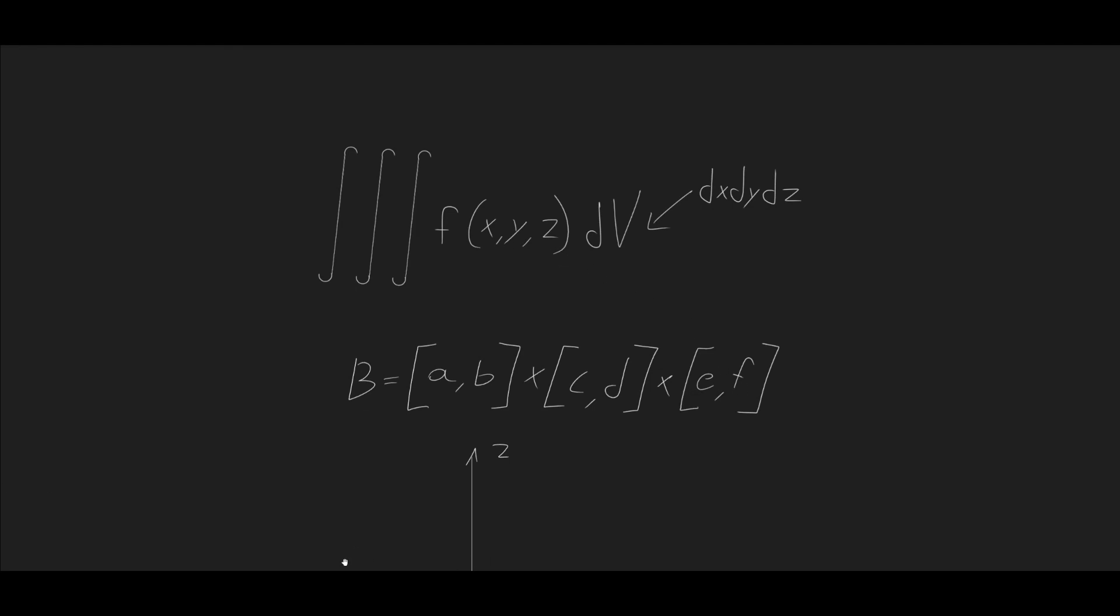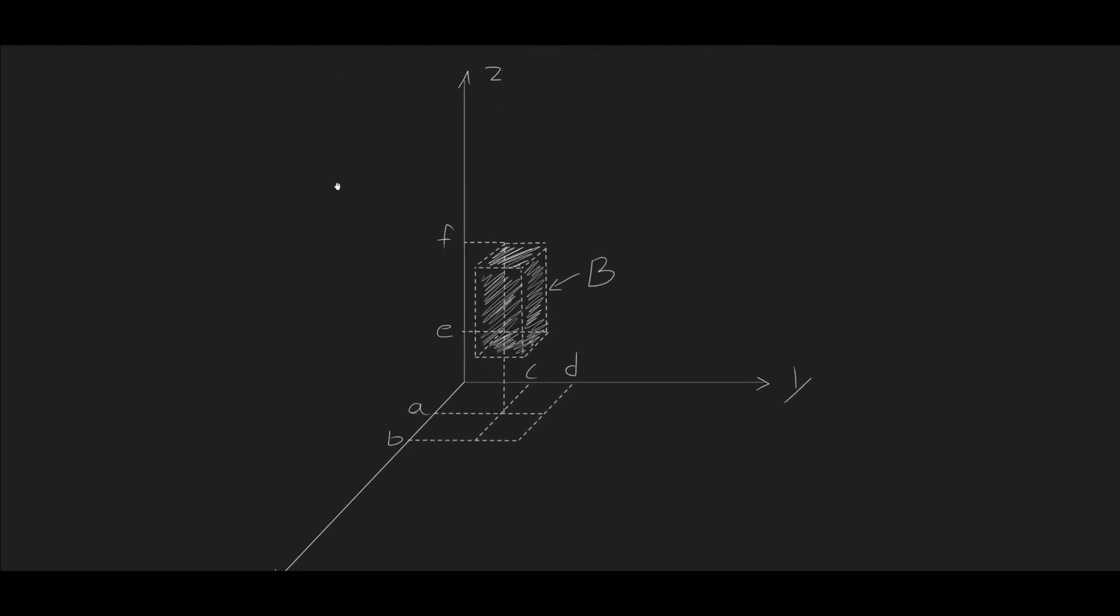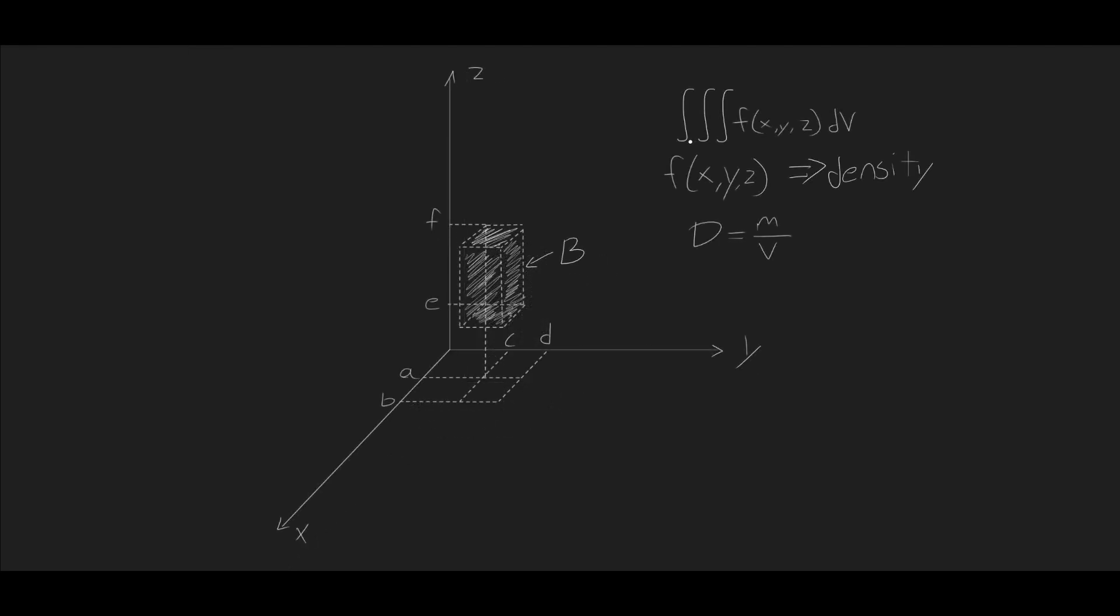The region which we're going to be integrating over is going to look something like this, where we have this box in three dimensions, and we're going to be integrating and finding the mass of this box. Something that the triple integral can represent is the mass.